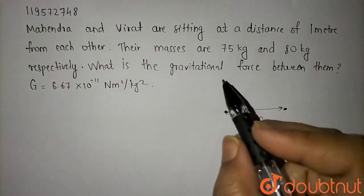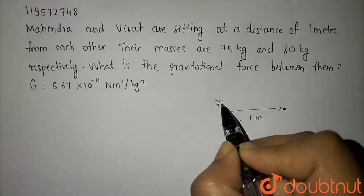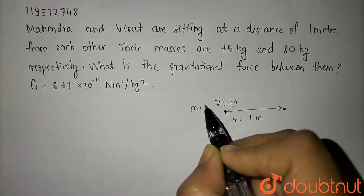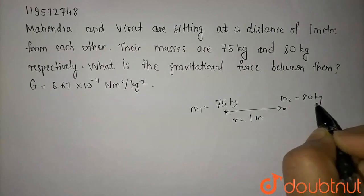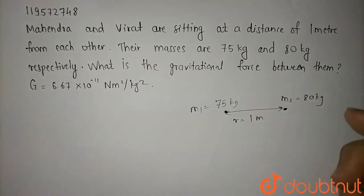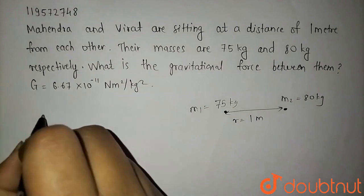Mahendra's mass is 75 kg, suppose that it is M1. And Virat's mass is 80 kg. What do we have to calculate? The gravitational force between them.